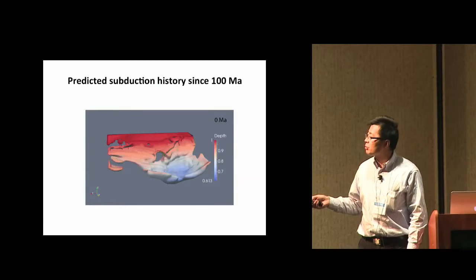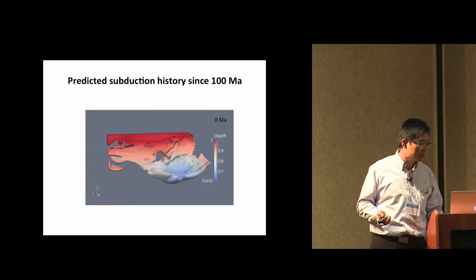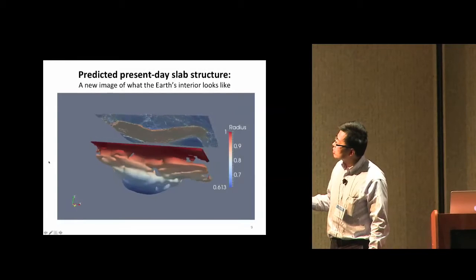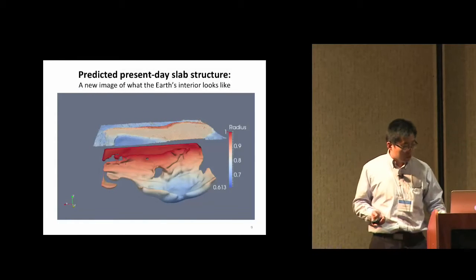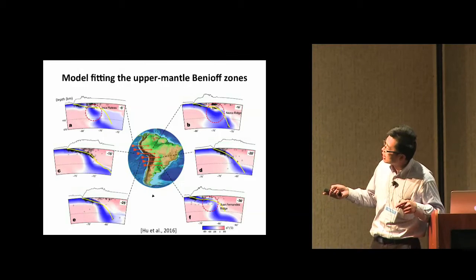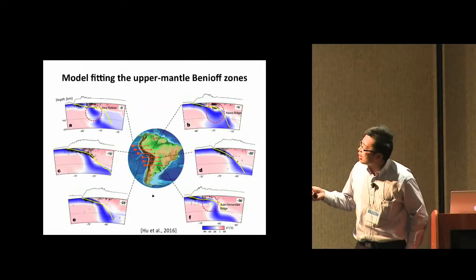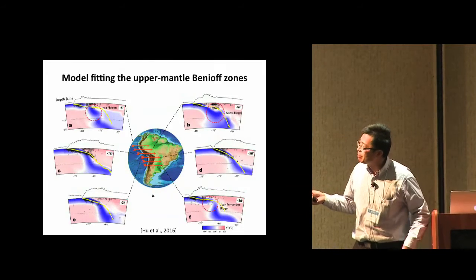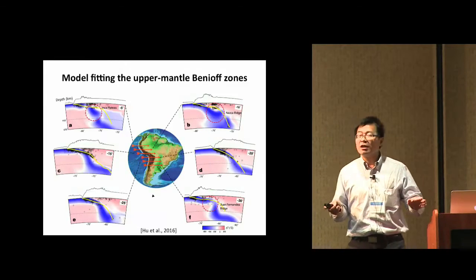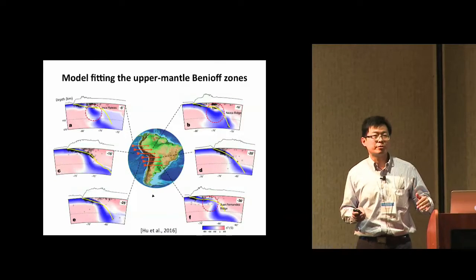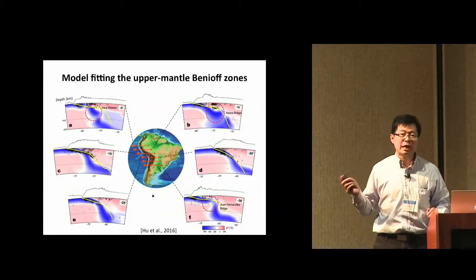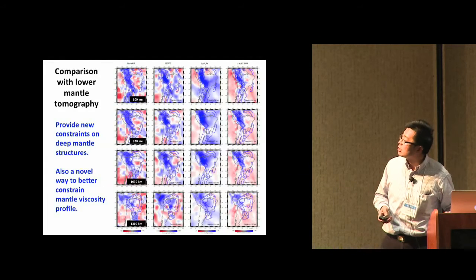This is the first time this kind of model has been generated. For validation, we look at the upper mantle — different cross sections where the predicted slab structure is shown in blue, and the yellow line is the best-fit geometry of earthquake distribution, known as the Benioff zone. Traditionally people use the Benioff zone directly to define slab geometry, but we are using a time-dependent model to predict it — a step forward compared to existing approaches.